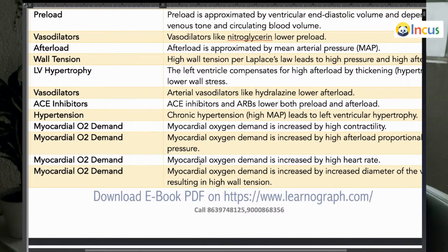There are arterial vasodilators that are not venodilators. Nitroglycerin and nitrates are venodilators. Arterial vasodilators like hydralazine decrease the afterload. ACE inhibitors — such as enalapril, ramipril, and all 'prils' — or ARBs (angiotensin receptor blockers) like losartan, telmisartan, and valsartan lower both the preload and afterload.